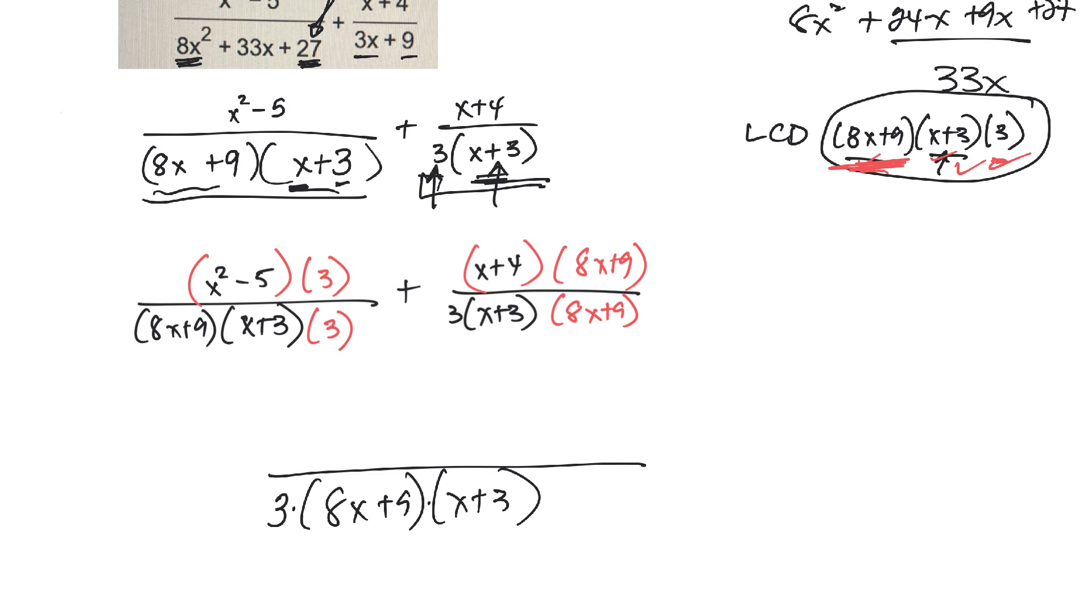It doesn't matter what order we put the factors in. And then on the top, I just write what I have there. Again, I'll put the 3 in front, 3 times x squared minus 5, plus x plus 4, times 8x plus 9.